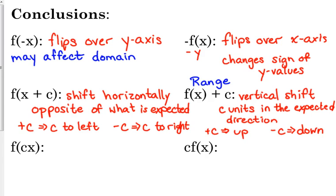If we shift it horizontally, that affects the domain, and it shifts the domain the same way it shifted the function. For example, the square root of x has domain 0 to infinity; if you move it 3 units left, the domain becomes negative 3 to infinity. Same thing with f of x plus c — that's going to affect the range. If you have a restricted range, it shifts by whatever units. For example, x squared has range 0 to positive infinity; shift it down 5 units and the range becomes negative 5 to positive infinity.